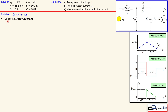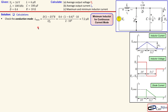In the solutions, first we check the conduction mode — what kind of mode we are operating in. For that we use the minimum required inductor value for the boost converter, given by this formula. The duty cycle, load resistor, and switching frequency determine it. With a duty cycle of 0.4, a resistor of 10 ohm, and switching frequency of 100 kHz, the minimum required inductance is 7.2 microhenries to stay in continuous conduction mode. What we have is 6 microhenries, which is less than the minimum, so the inductor current must be discontinuous — we are in the discontinuous conduction mode.